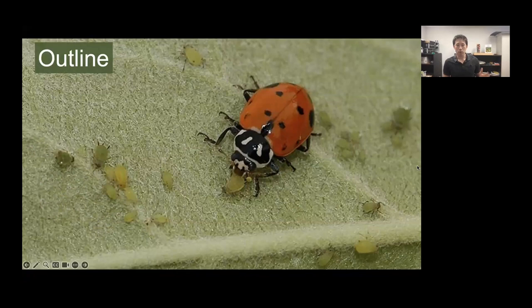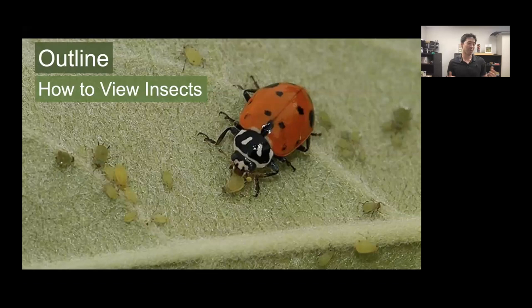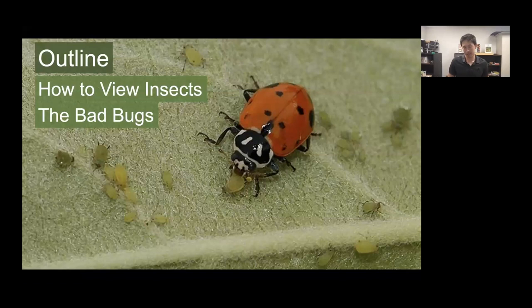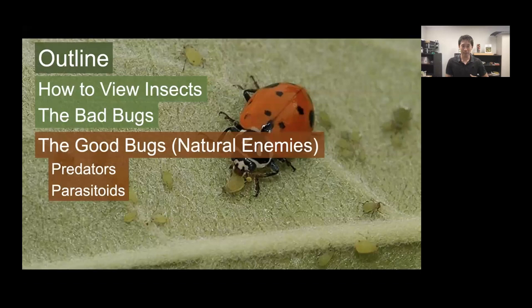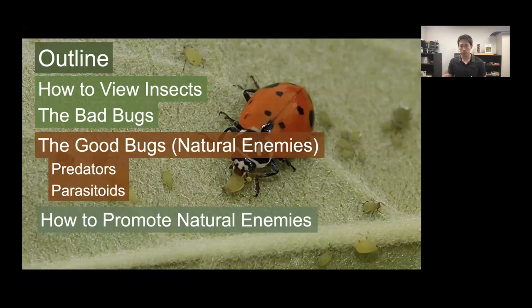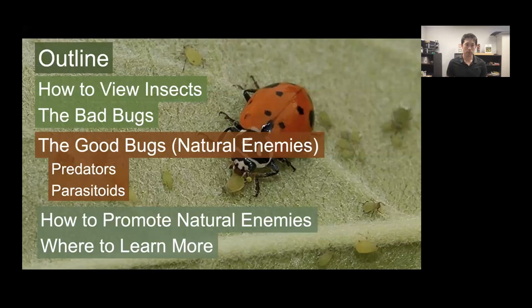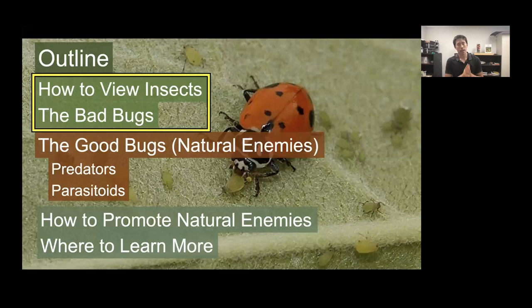Here's an outline of what we're going to cover today. First, we'll start philosophically about how to view insects—thinking about them as beneficial rather than detrimental. We'll then talk about some of the bad bugs you don't want in your gardens, which will help us understand why the good ones—natural enemies including predators and parasitoids—are so valuable. We'll also cover how to promote natural enemies and where you can learn more.